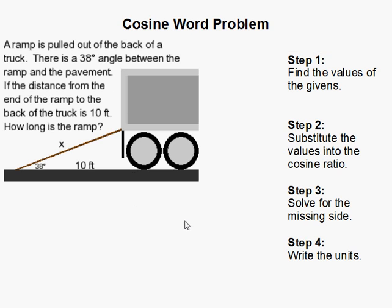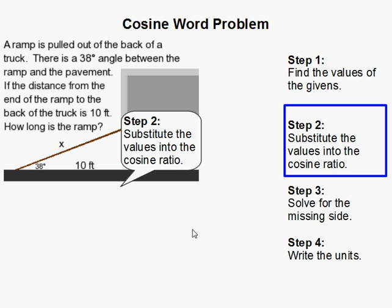So now that I have the values, I know it needs to be cosine. We substitute it into the cosine ratio. So here's the cosine ratio. The cosine of the angle is equal to the adjacent side over the hypotenuse.